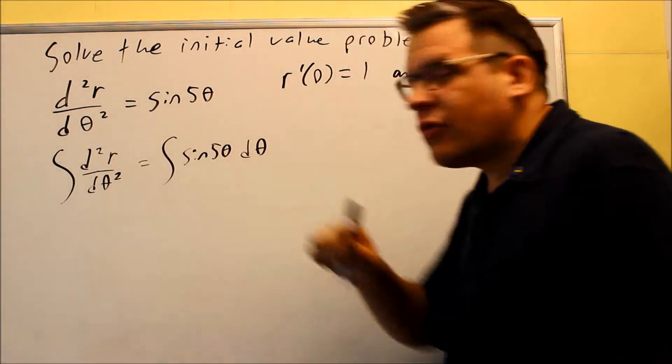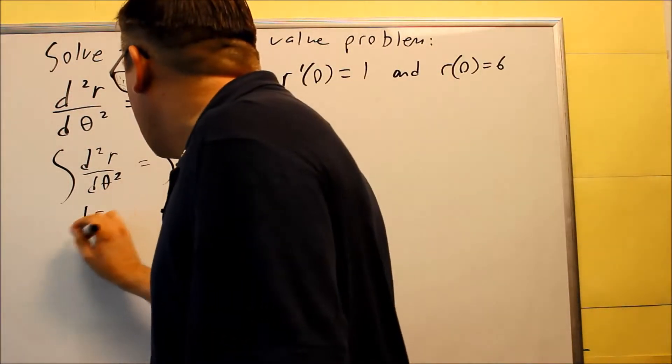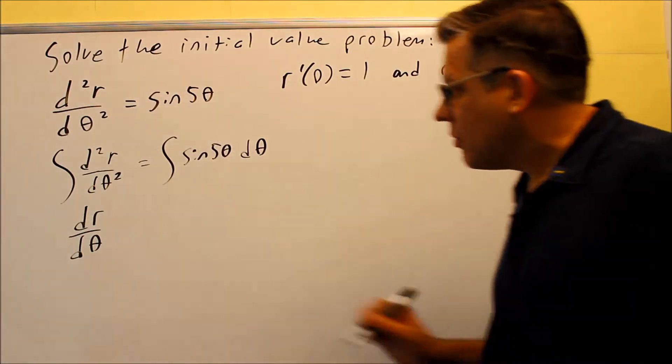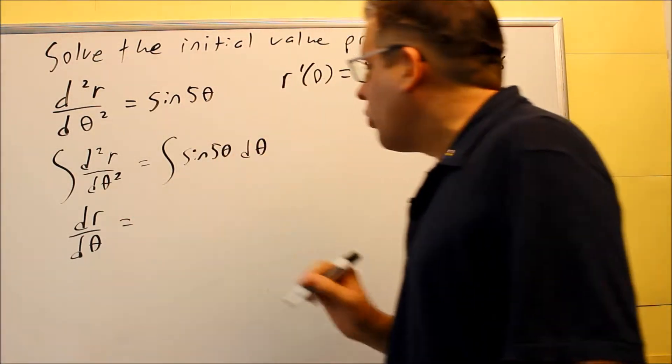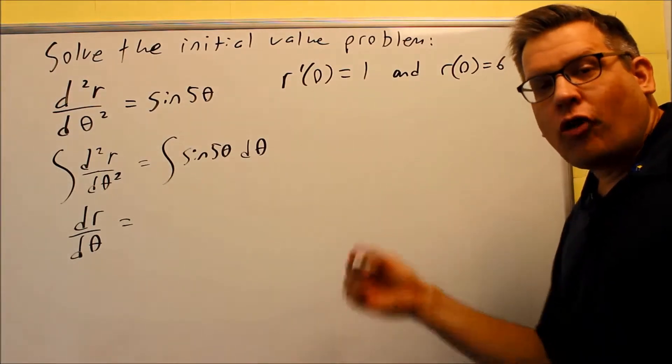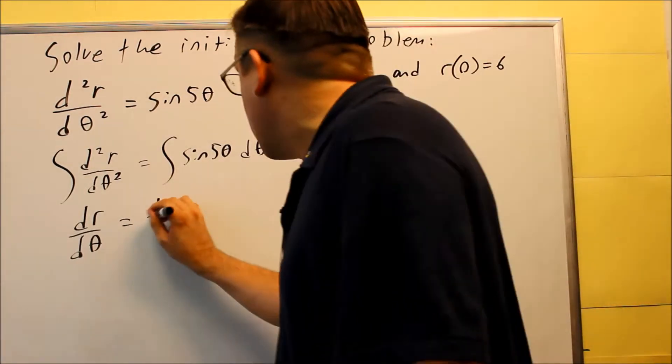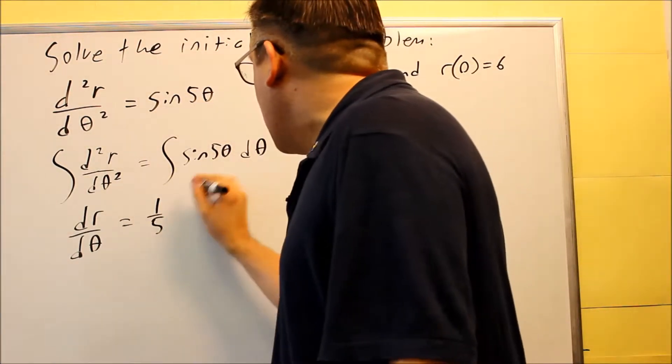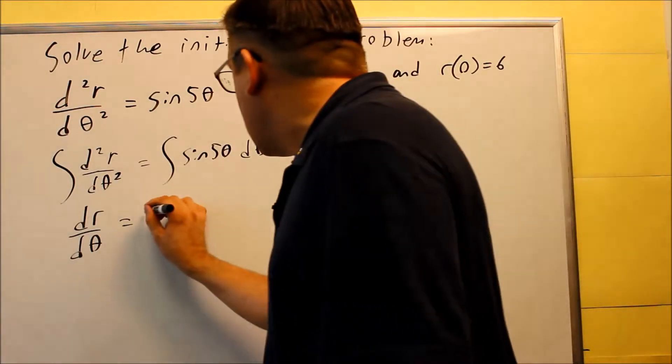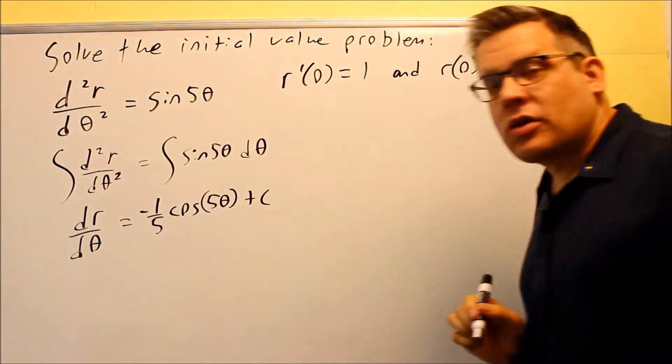We talked about before that if you take the anti-derivative of the second derivative, then you're going to get the first derivative here. So we're going to get dr/dθ. On this side, we want to take the anti-derivative of sine of 5θ. That uses a formula we talked about at the beginning of this section. The k value is 5, so that's going to turn into 1/5. And then if we integrate sine, we're going to get cosine, and that's going to be a negative. Also, we have plus c.